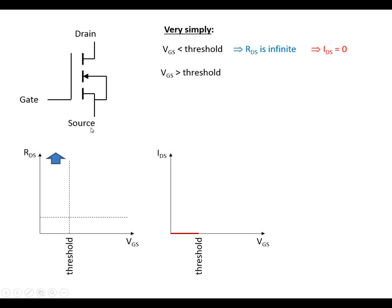If we bring the voltage across the gate and source above the threshold, the resistance between drain and source is going to drop down very rapidly and end up being a constant low value after a very short change in VGS. We find that the current starts to flow between the drain and the source.